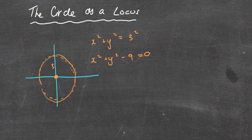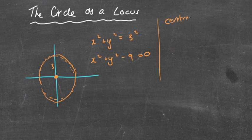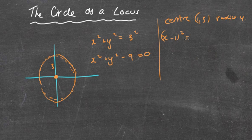We also did the same thing where we looked at questions where you might have a center at, let's say, one, three, and a radius of four. And instead of using the x squared plus y squared, we used the x minus h all squared plus y minus k all squared equals r squared.